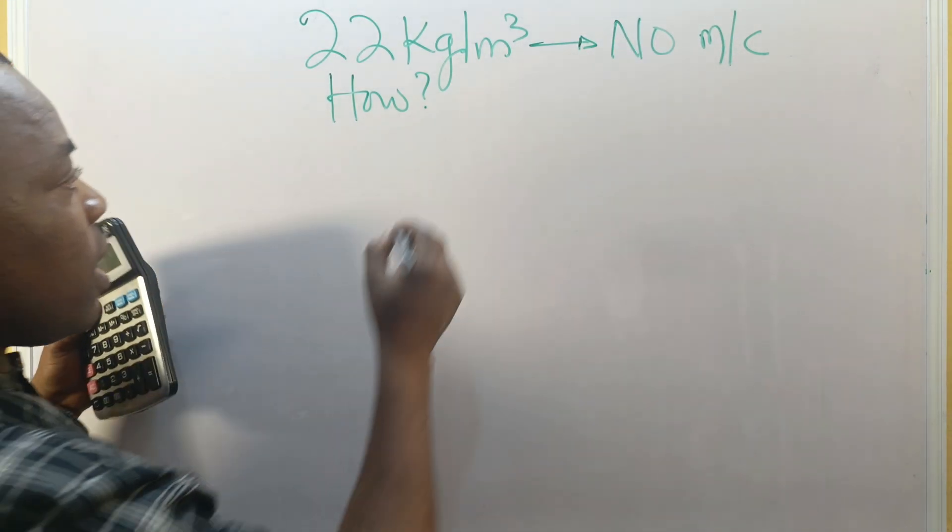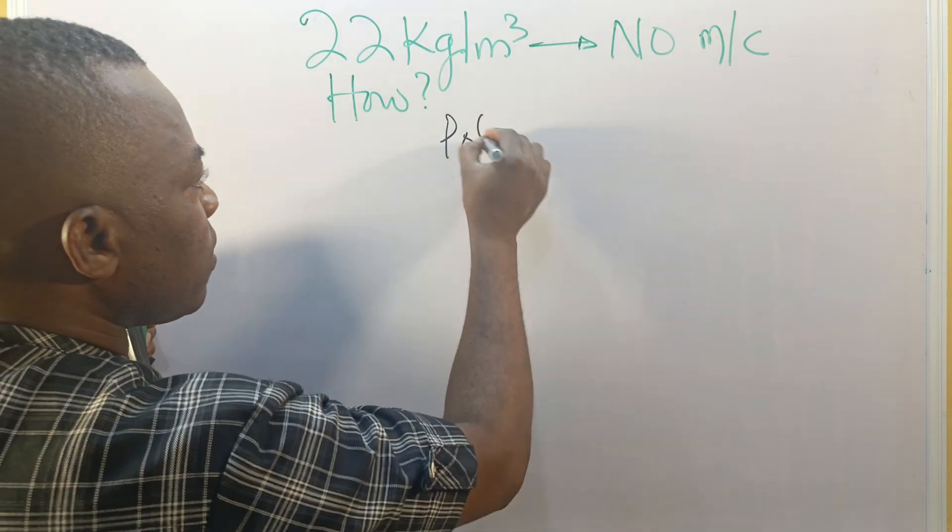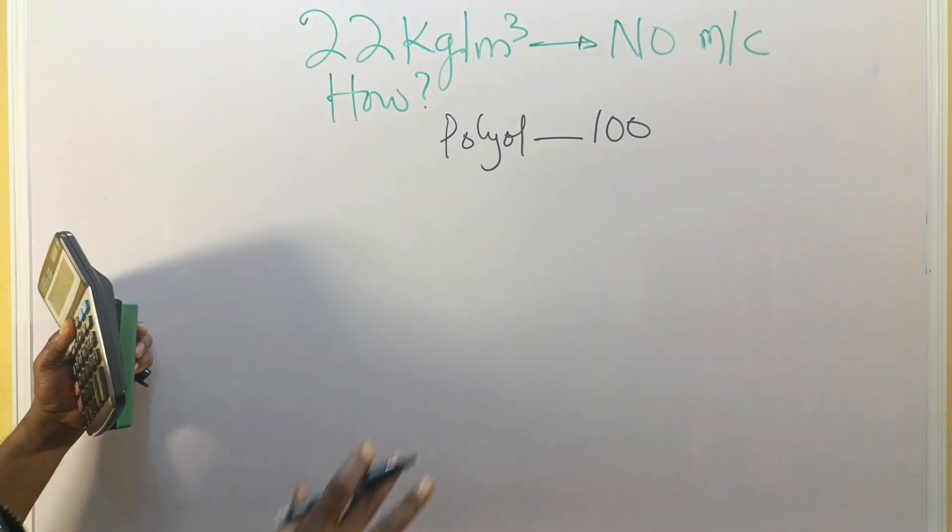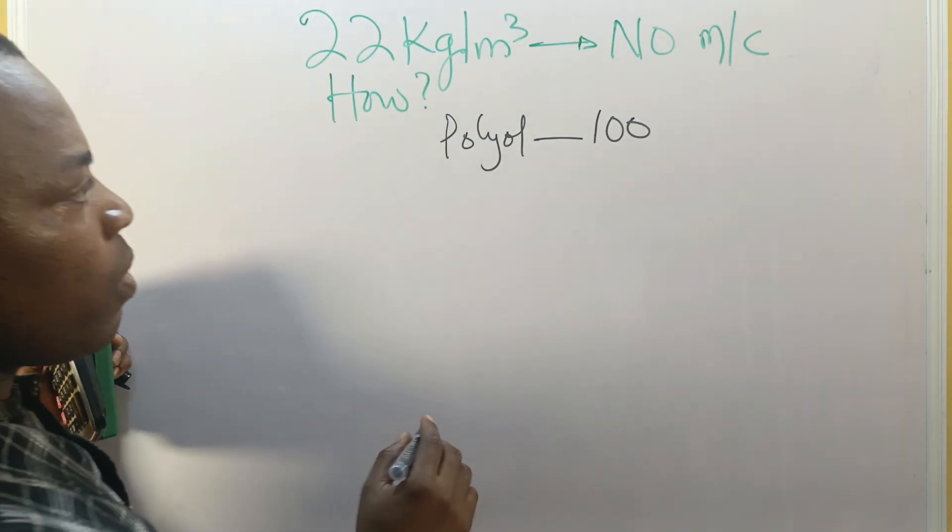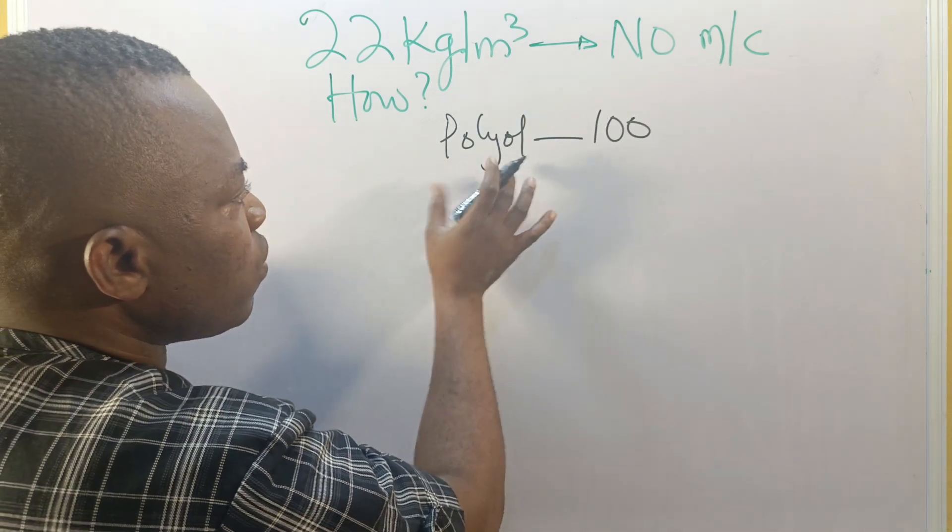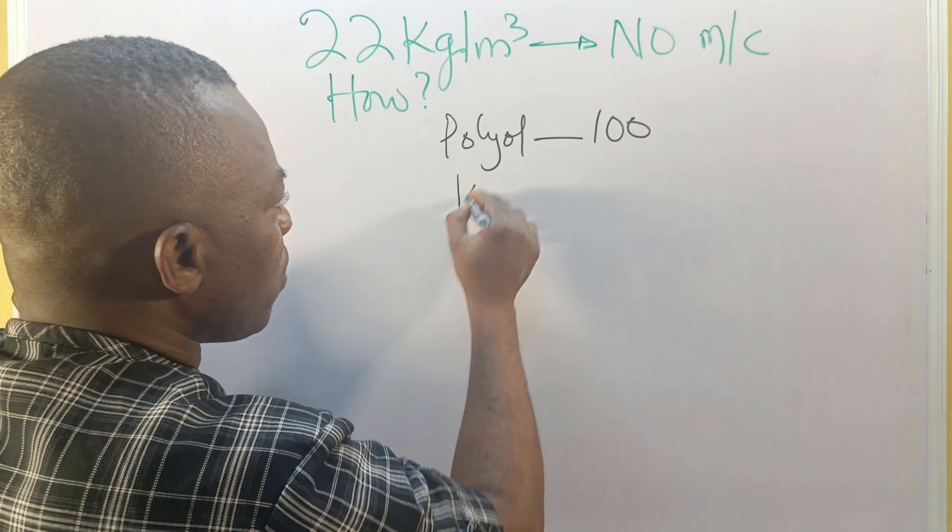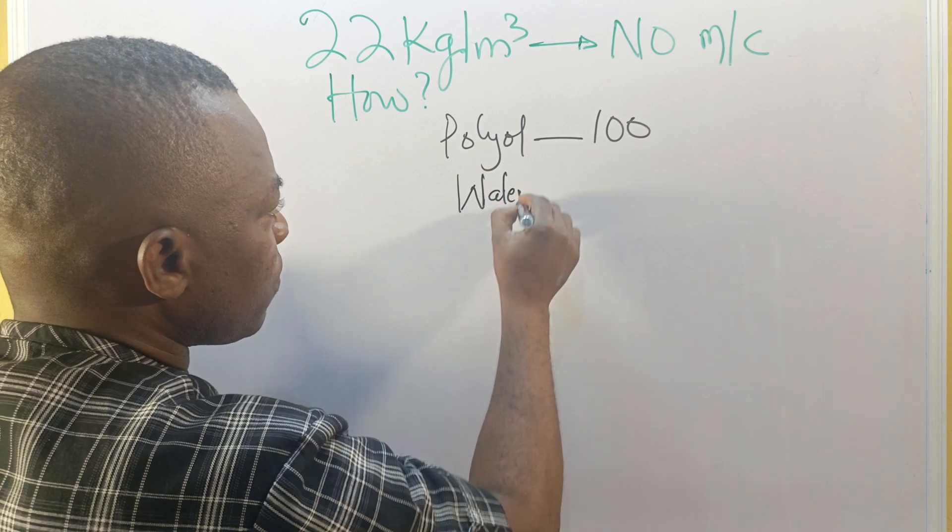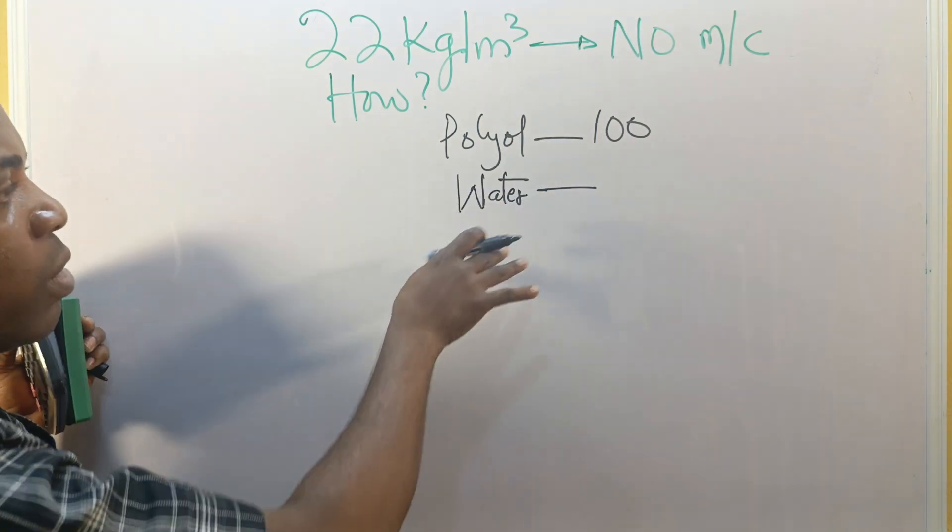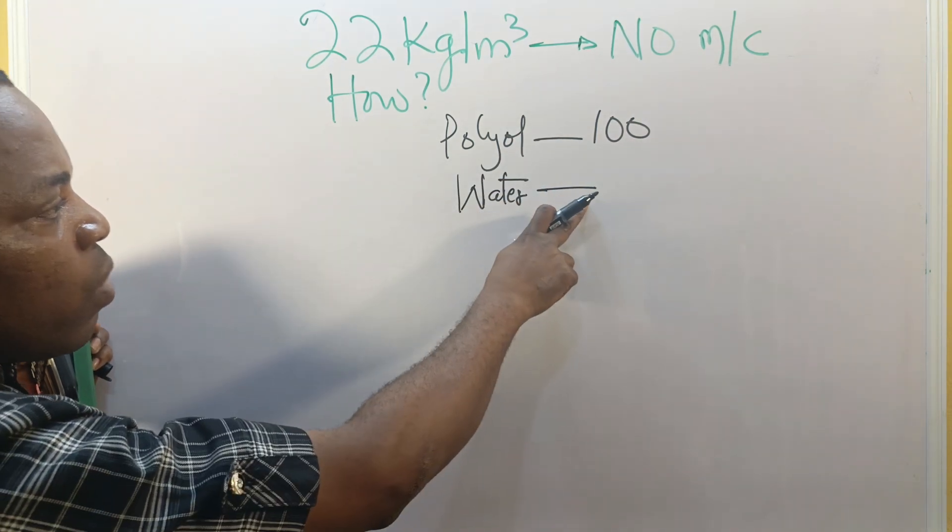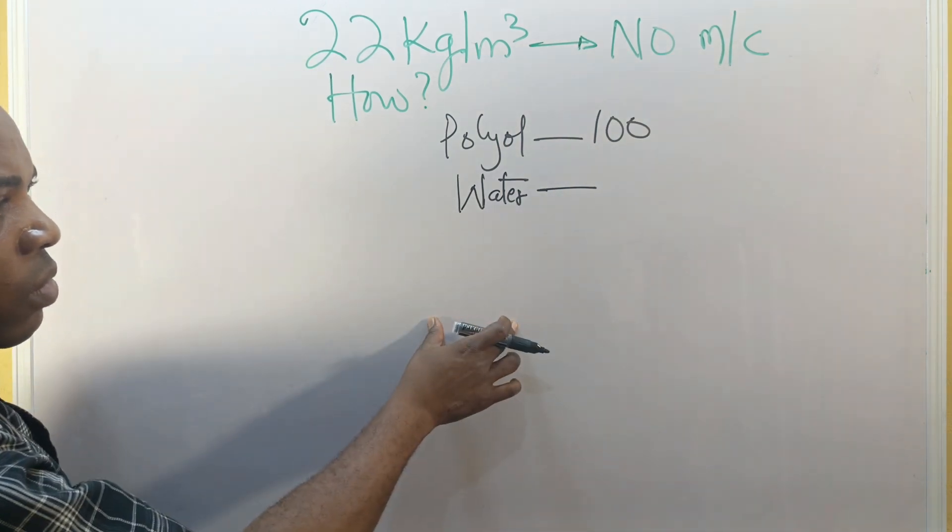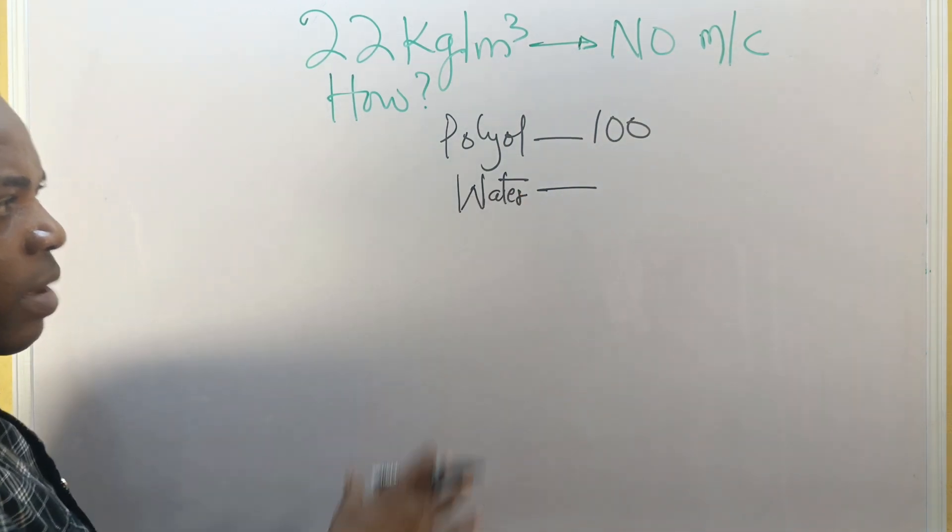So in this case, our polyol here will be 100. You know this now, by this time. Remember, we are not including methylene chloride here. And when you choose polyol, the next thing is water. Water blown formulation.